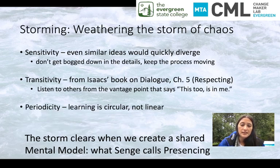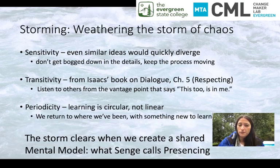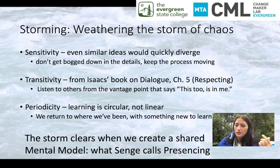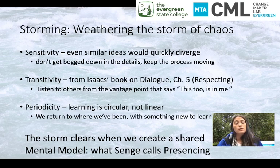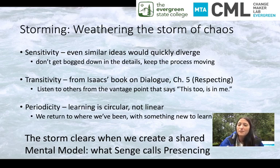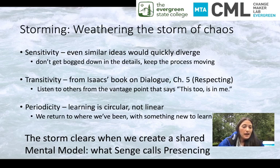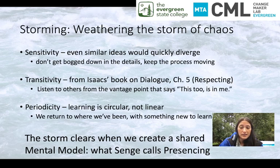The goal is to get to Senge's stage of presencing, where we create that shared mental model and see all these seemingly opposing pieces as part of a greater whole. The property about periodicity tells us that learning is circular, not linear. You may return to where you've already been, but think of that in terms of circular learning — even when you feel like you're coming back to a place you were, you're circling back and there's always something new to learn. You're not just returning to where you were; there's always something slightly different and new. So don't get discouraged when you feel like you're coming back upon something. If we practice and understand all those things, they will help us create a shared mental model and see ourselves as part of a whole — then we'll be in the state of presencing.